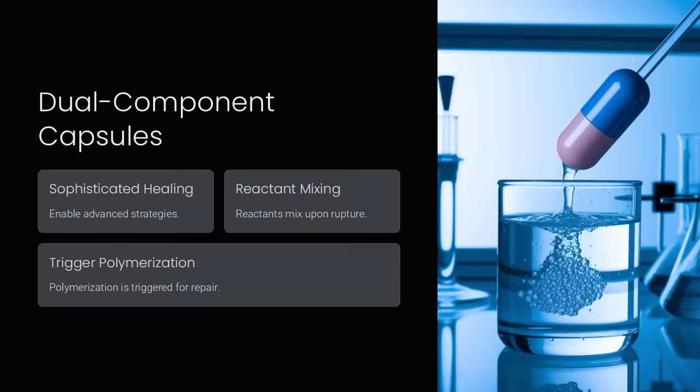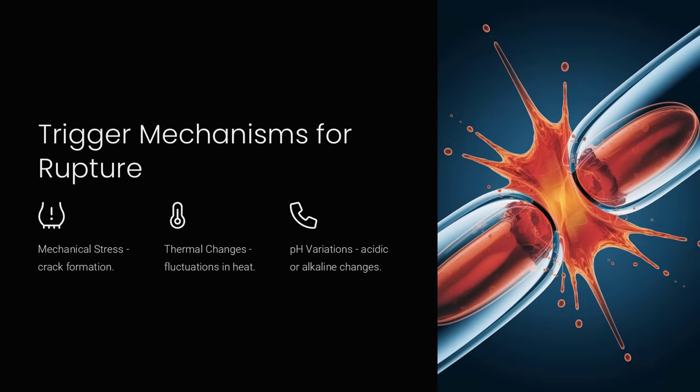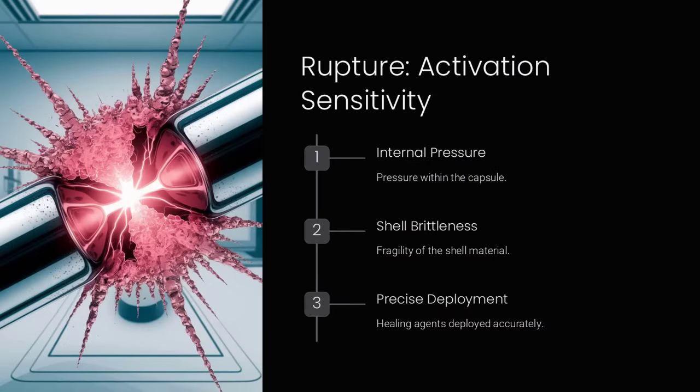In aerospace and automotive industries, self-repairing coatings can prevent corrosion and wear, increasing safety and durability. Even in electronics, microcapsules can protect circuits from moisture or mechanical stress.